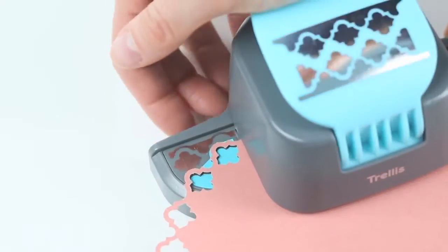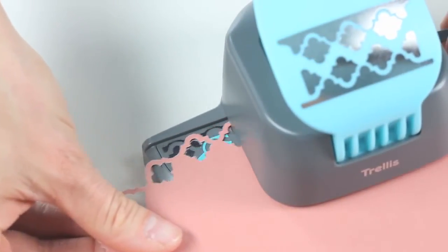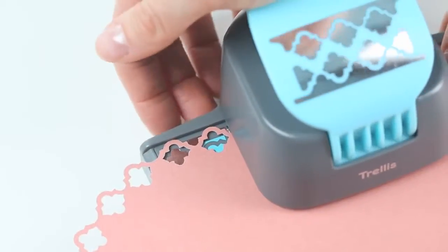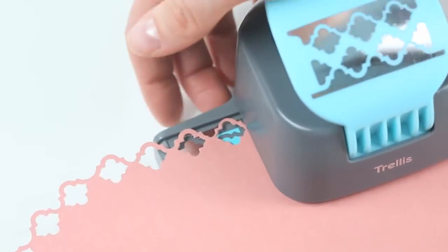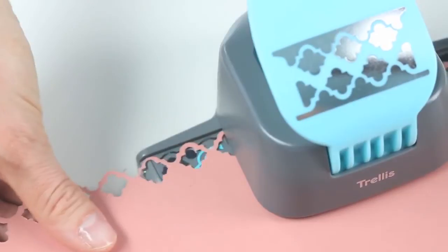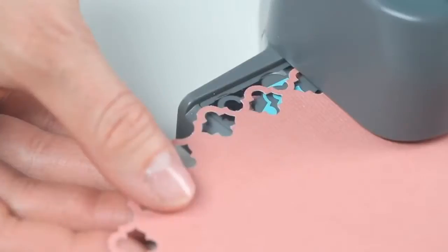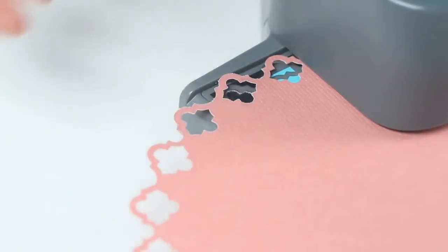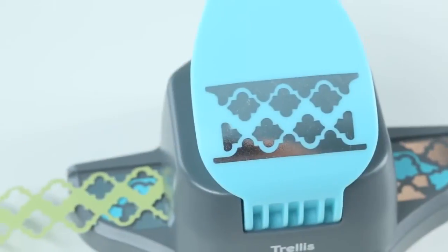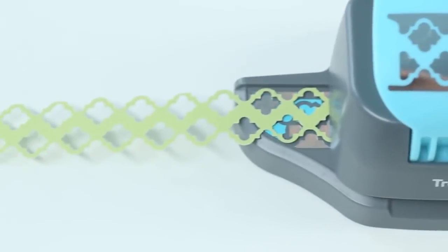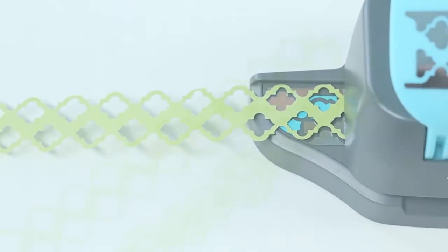Use the blue pattern on the tool to line up the punch design and then start punching your paper. Use the silver pattern on the tool to punch across the straight edge on the paper. Repeat that process until you have finished punching along all the sides. The 2-Edge Punch's convenient button system allows you to easily create unique borders also.